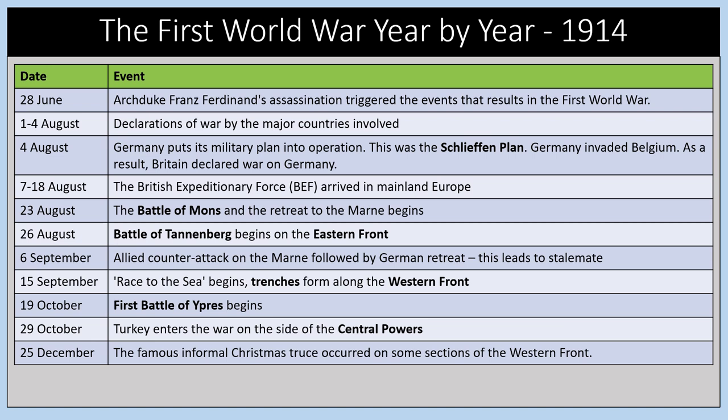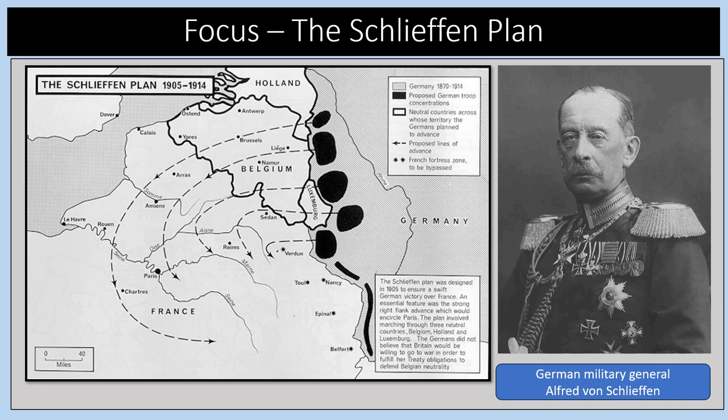From the 7th to the 18th of August, the British Expeditionary Force arrived in mainland Europe. Early battles included the Battle of Mons, the Battle of Tannenberg, and an Allied counter-attack on the Marne, followed by a German retreat, which led to a stalemate. In September and October there was the Race to the Sea, where trenches began to form along the Western Front. The First Battle of Ypres was in October 1914. On the 29th of October Turkey entered the war on the side of the Central Powers, and on the 25th of December 1914 there was a famous informal Christmas truce on some sections of the Western Front.